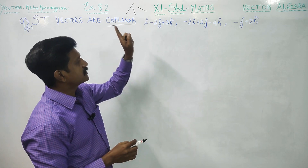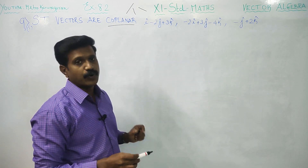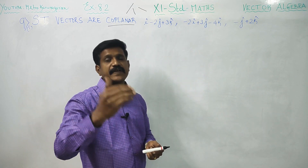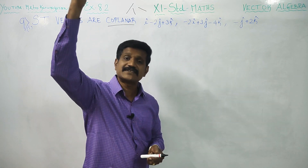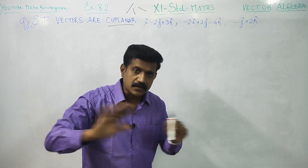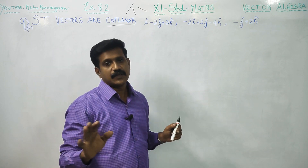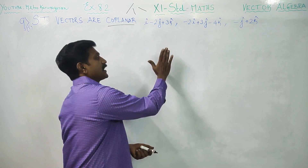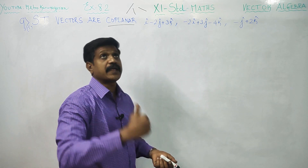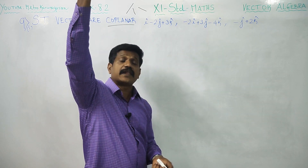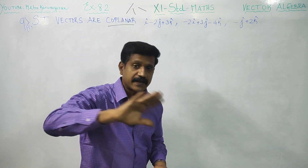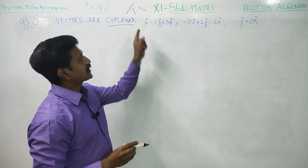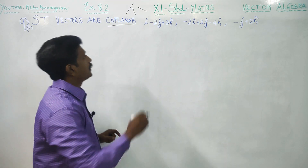For example, if one vector is on this whiteboard, another vector is on the floor, and another vector is on the ceiling, then they are not coplanar — because each lies in a different plane. Coplanar vectors are vectors lying on the same plane.